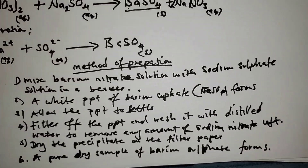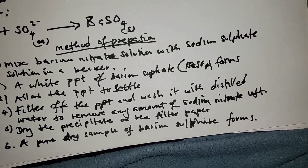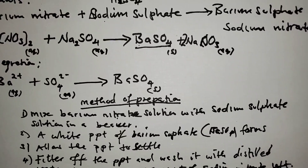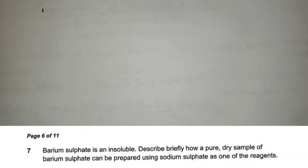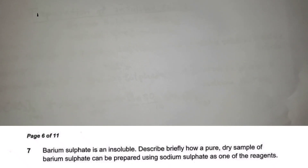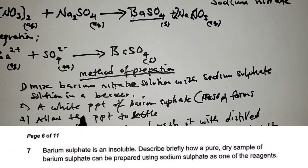Now let's look at an exam question based on what we've covered. The question says: 'Barium sulfate is an insoluble salt. Describe briefly how a pure dry sample of barium sulfate can be prepared using sodium sulfate as one of the reagents.' This is worth five marks.